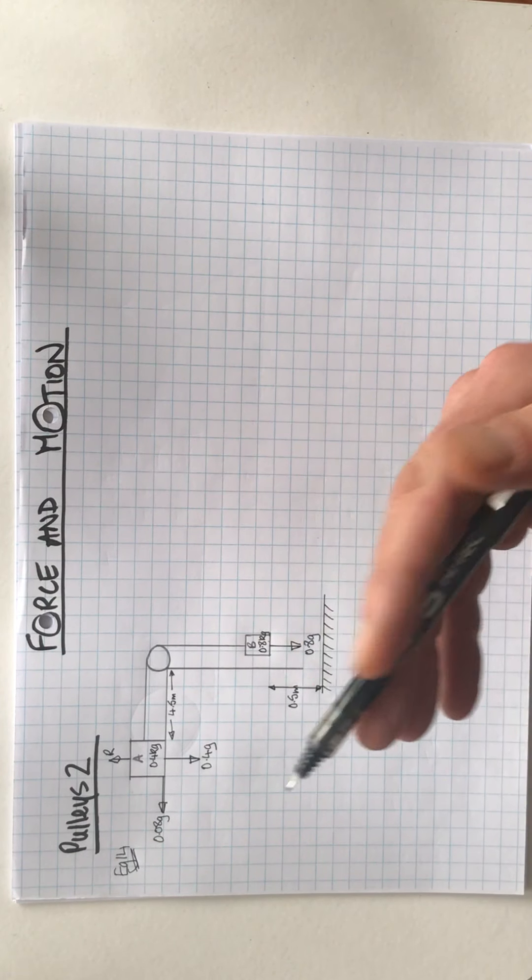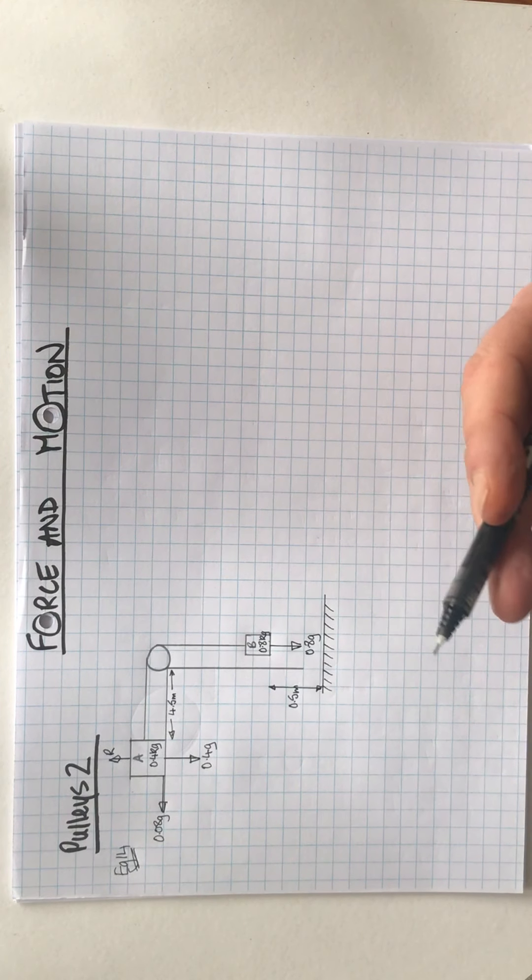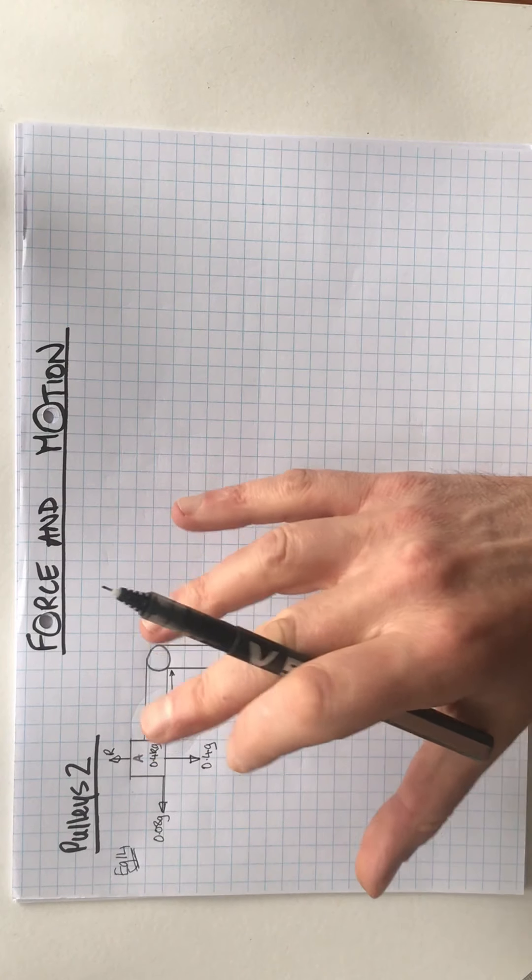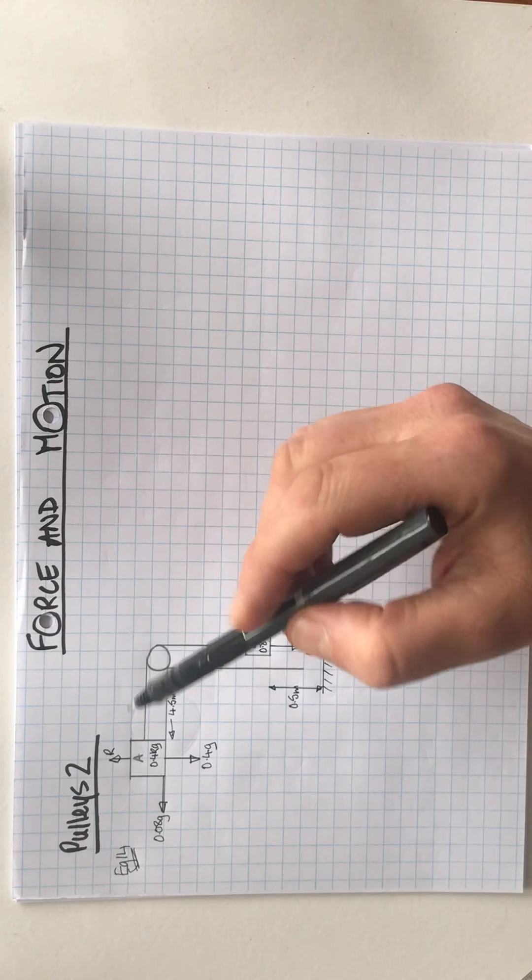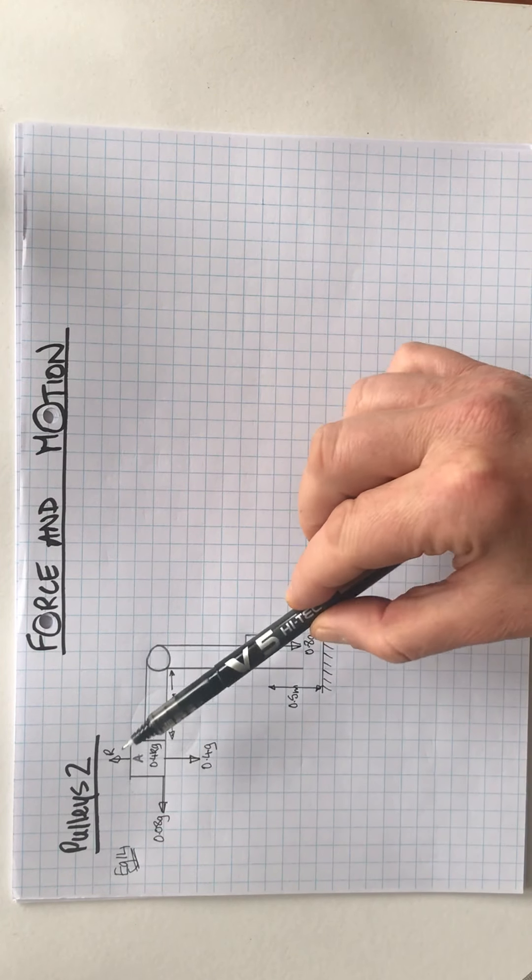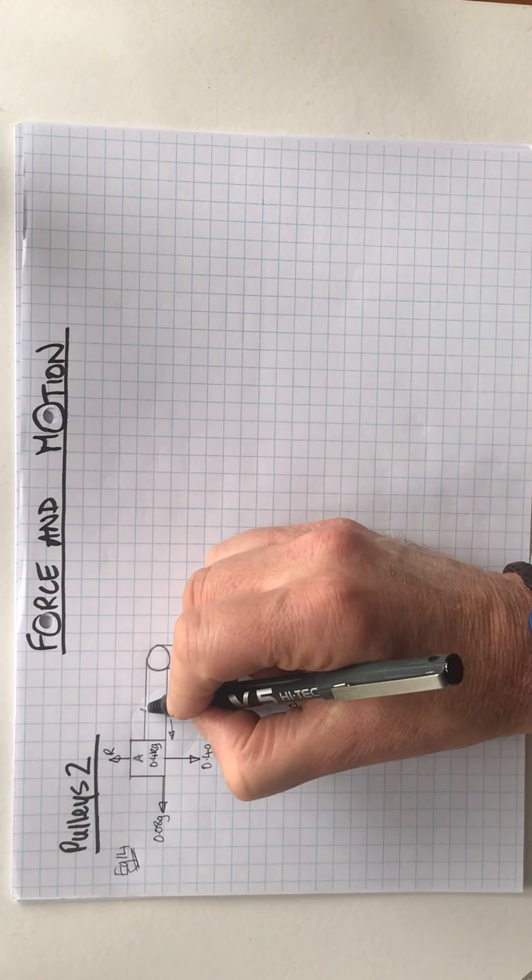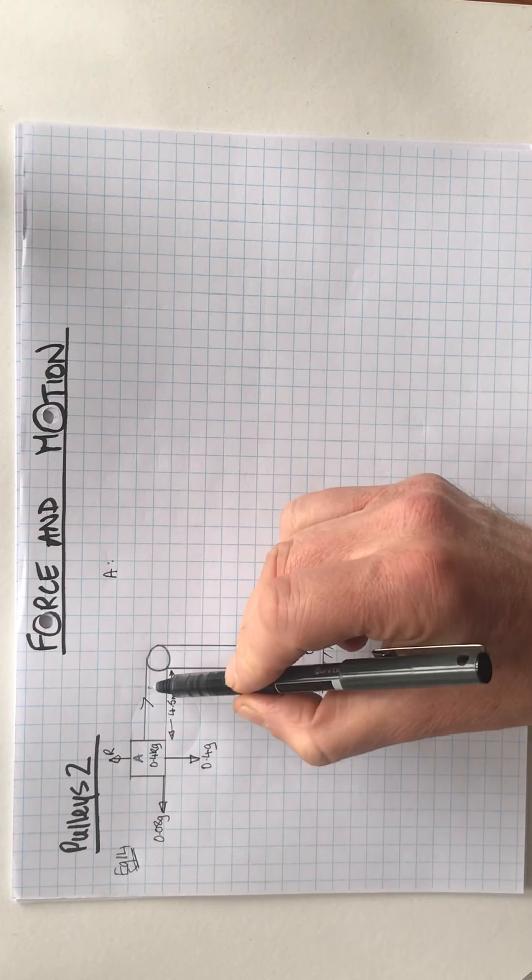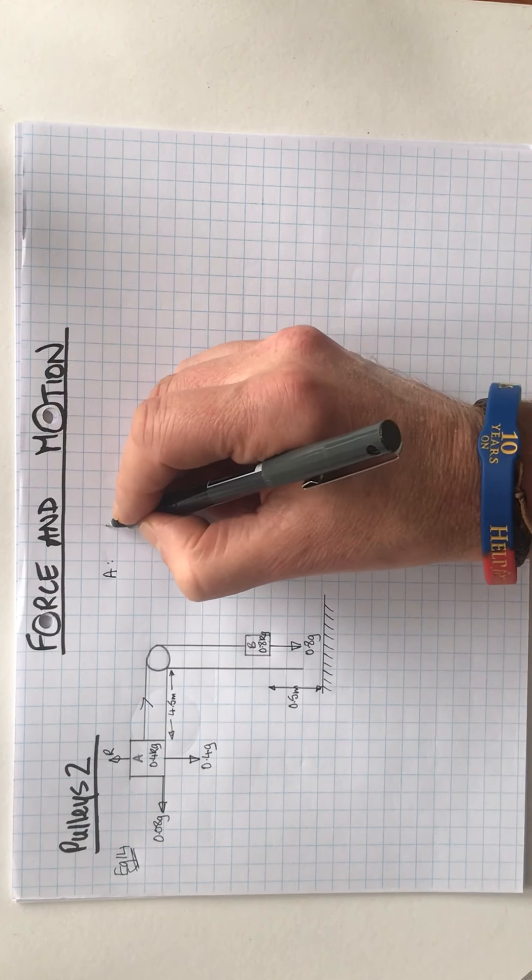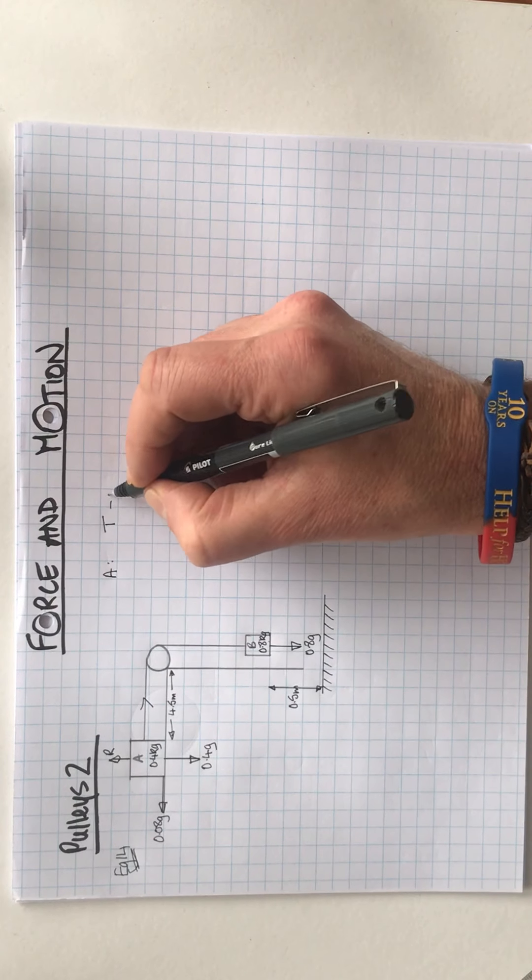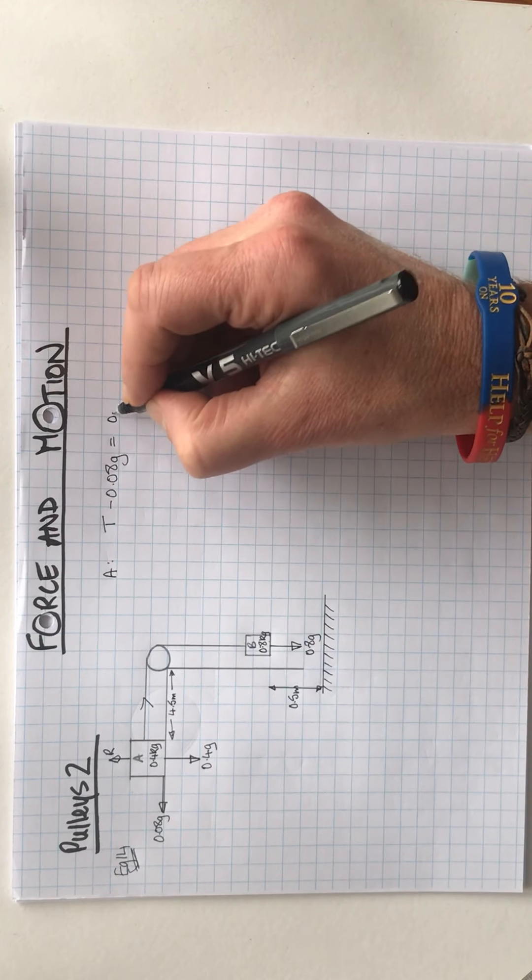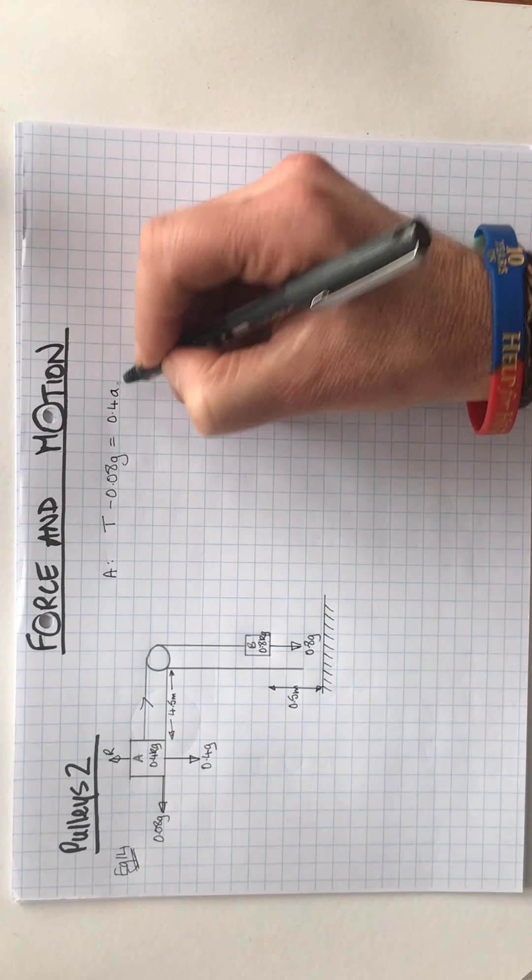The system is released from rest. We need to find the acceleration of the system. Let's consider what forces are making this move. Let's look at A. We have a tension here. So for A, we have a tension that way. Presumably this is moving this way, accelerating to the right. So we've got tension that way. We have a force slowing it down, which is 0.08g. And that's going to equal the mass, 0.4 times acceleration, which is A.